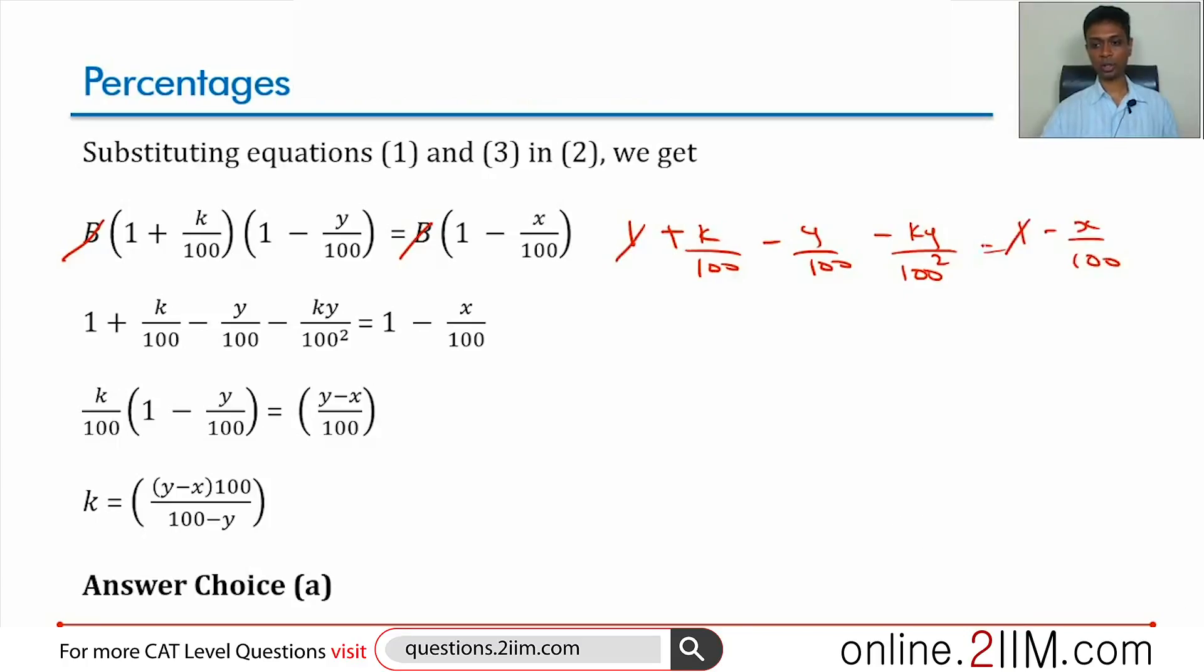One gets knocked out, we can even knock off 100. k minus y minus ky by 100 equals minus x.